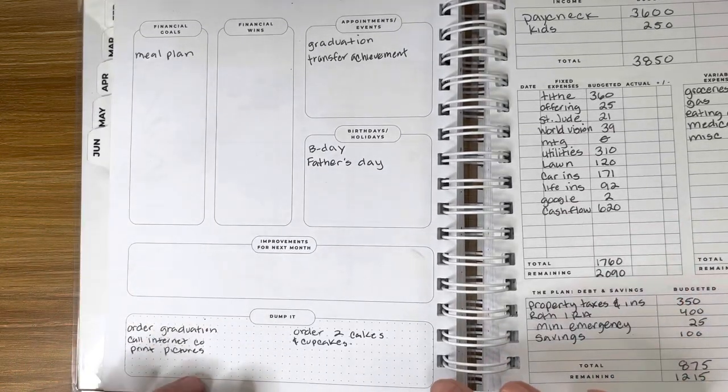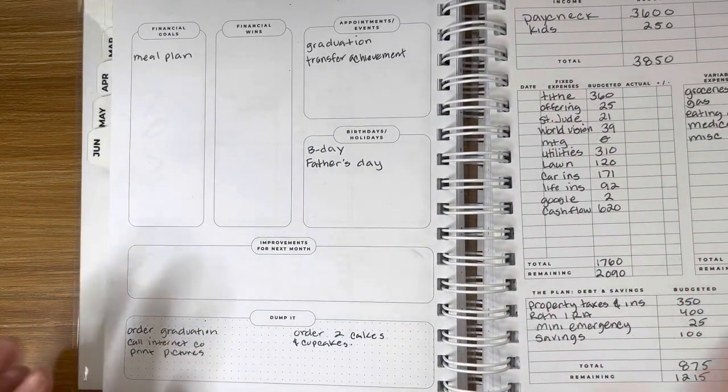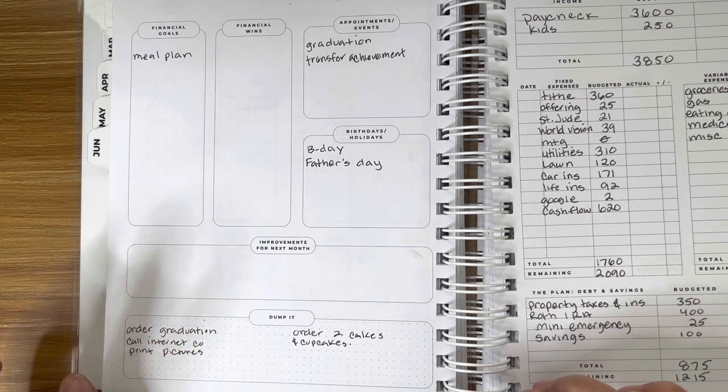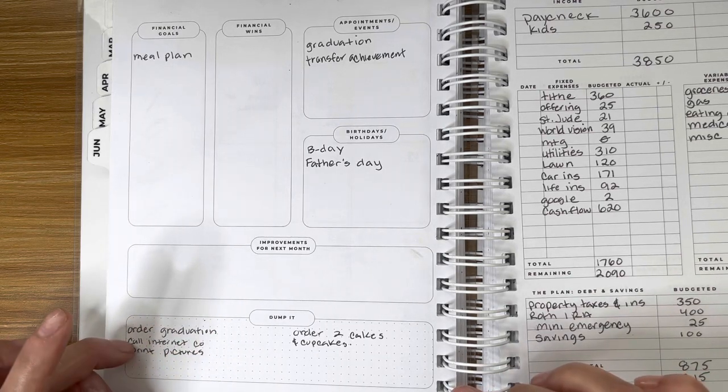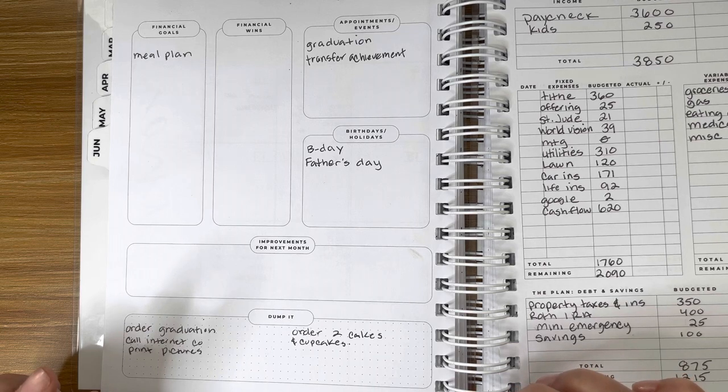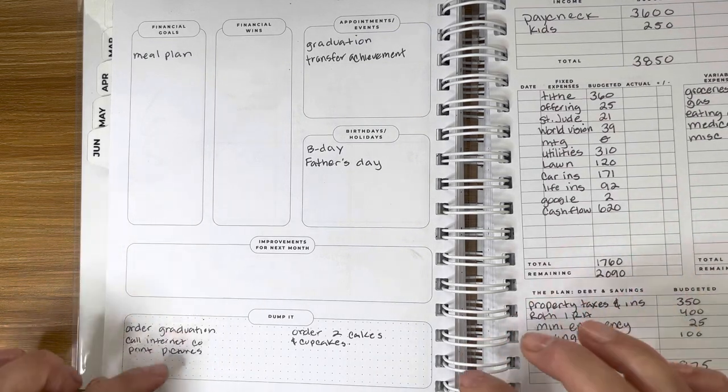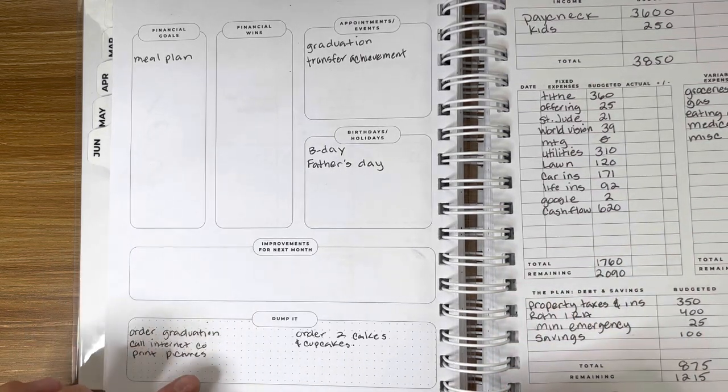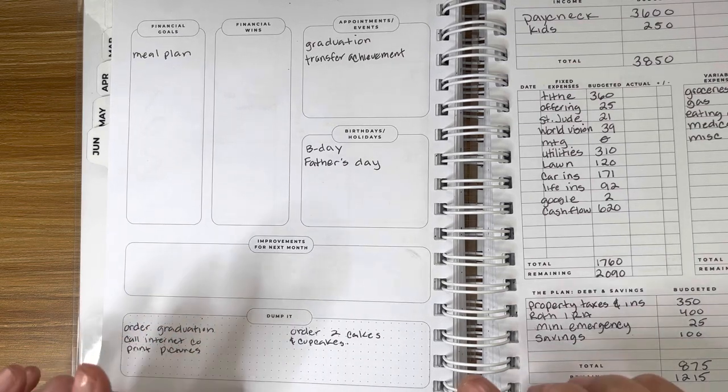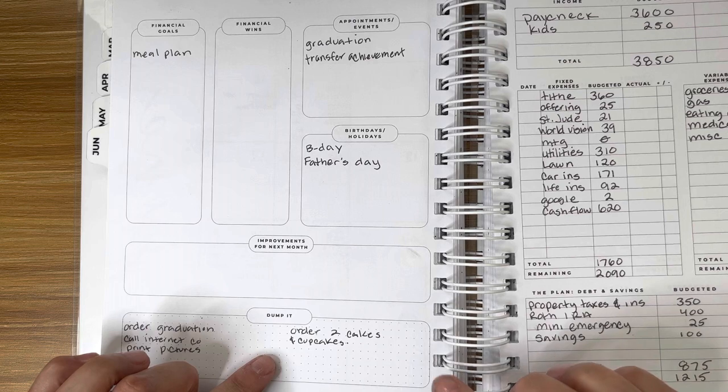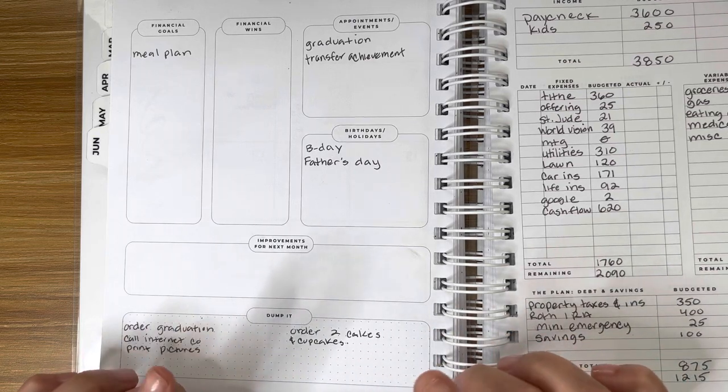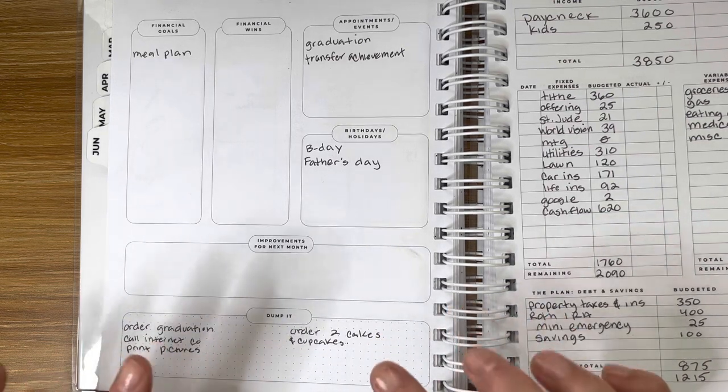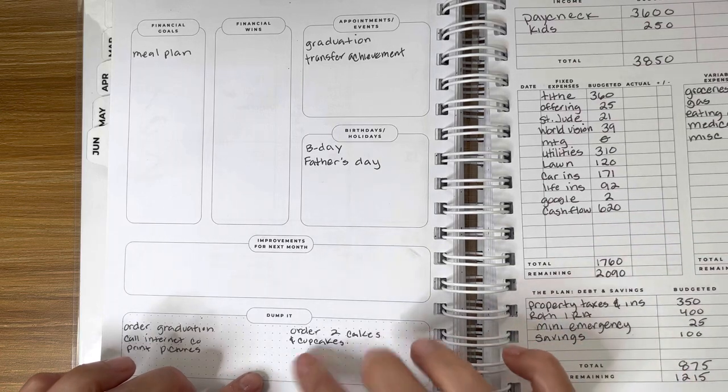Things that I want to remember to do: I'm going to have a little graduation party for my daughter. So I need to order some graduation decor, which I did already. We have to call the internet company regarding our discount program. I need to print some pictures for the cake and to have for the graduation party. And then I need to order two cakes. The day of her graduation party, my daughter's birthday is the day before. So I want to have a birthday cake and a graduation cake, and I need to order cupcakes.